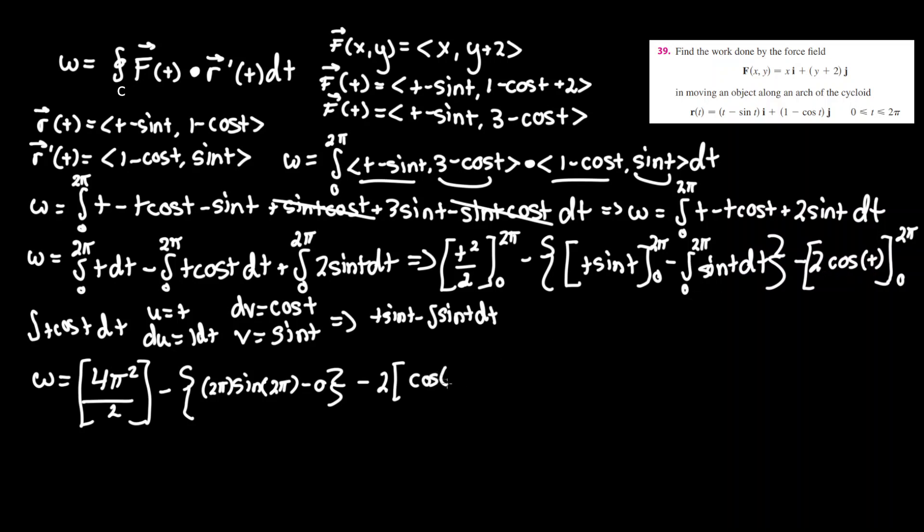And you're plugging the 2pi in for t here, so it'd be cosine t, so cosine 2pi minus the lower bound cosine of 0, and we are almost there.